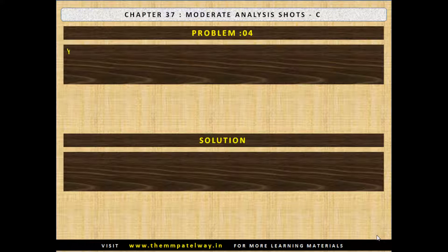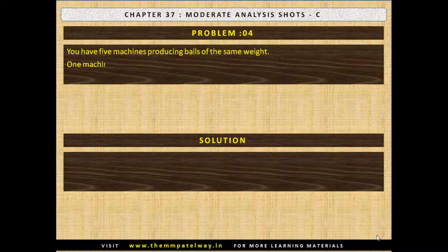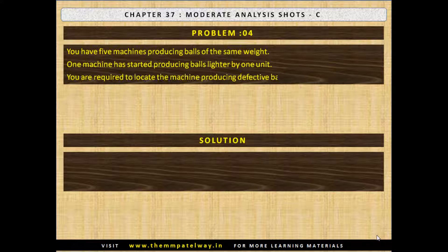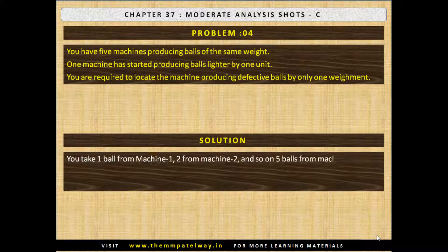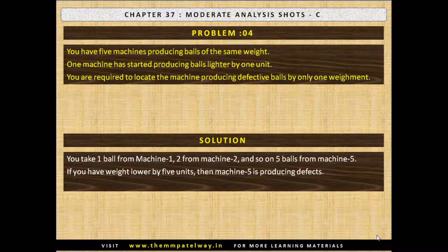Problem No. 4. You have 5 machines producing balls of the same weight. One machine has started producing balls lighter by 1 unit. You are required to locate the machine producing defective balls using only 1 weighing. The solution: take 1 ball from machine 1, 2 from machine 2, and so on up to 5 balls from machine 5. If the weight is lower by 5 units, machine 5 is producing defectives; if lower by 4 units, machine 4 is producing defects, and so on.